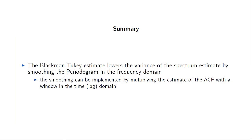To summarize: the Blackman-Tukey estimate lowers the variance of the periodogram estimate by smoothing the periodogram in the frequency domain. This is not implemented directly — as that would be inefficient — but instead by computing the autocorrelation estimate and multiplying it by a window in the time domain, which creates the desired convolution in the frequency domain.